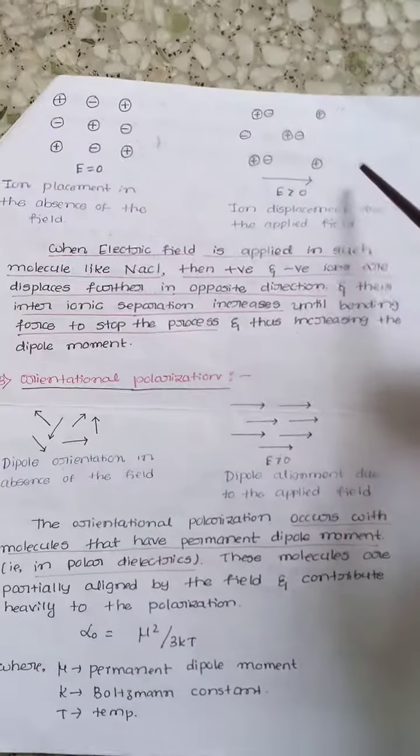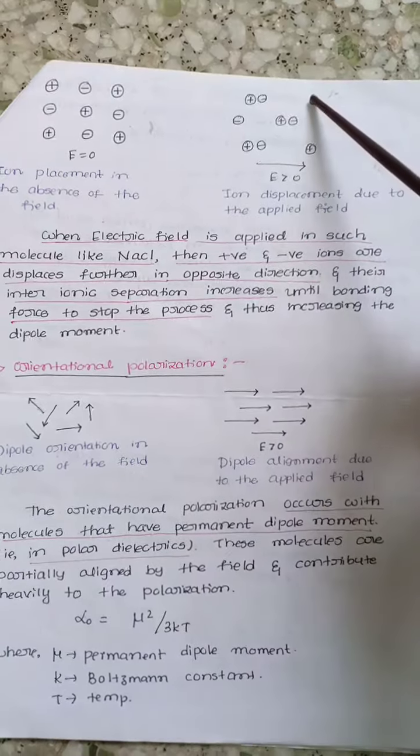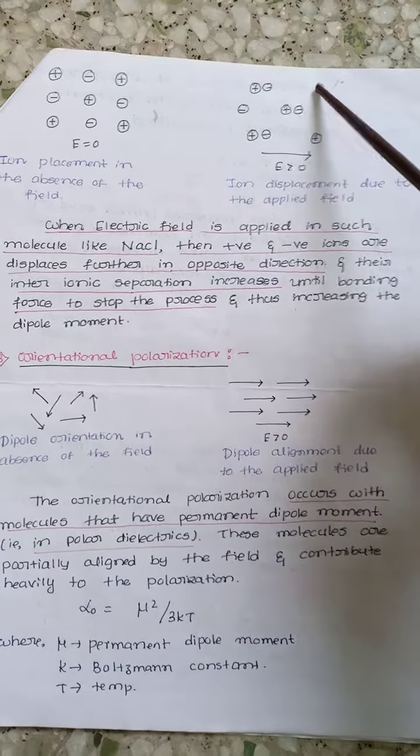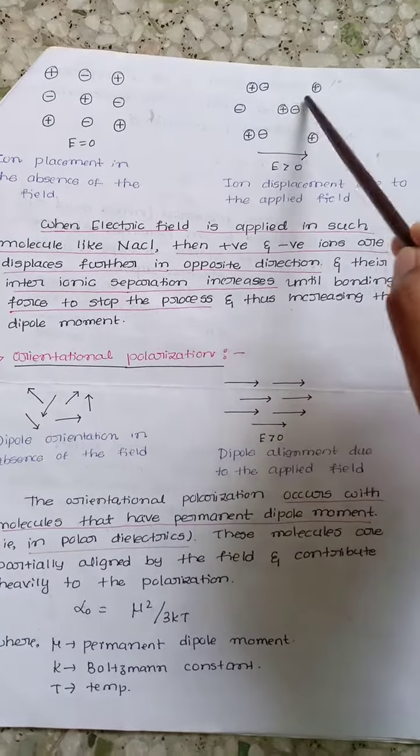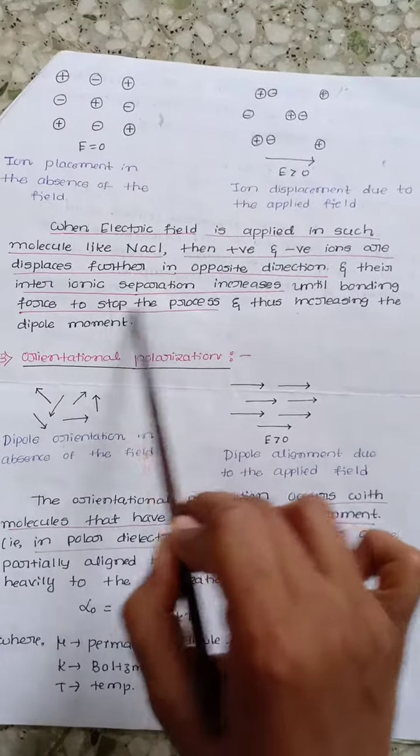The positive and negative ions displace in opposite directions and their interionic separation increases until the bonding force stops the process, thus increasing the dipole moment.